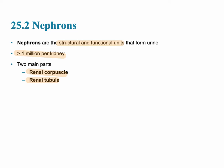The main part of the kidney is called the nephron. The nephron is the structural and functional unit of the kidney that forms the urine. We have approximately at least 1 million nephrons per kidney. The two main parts of the nephron are the renal corpuscle and the renal tubule.